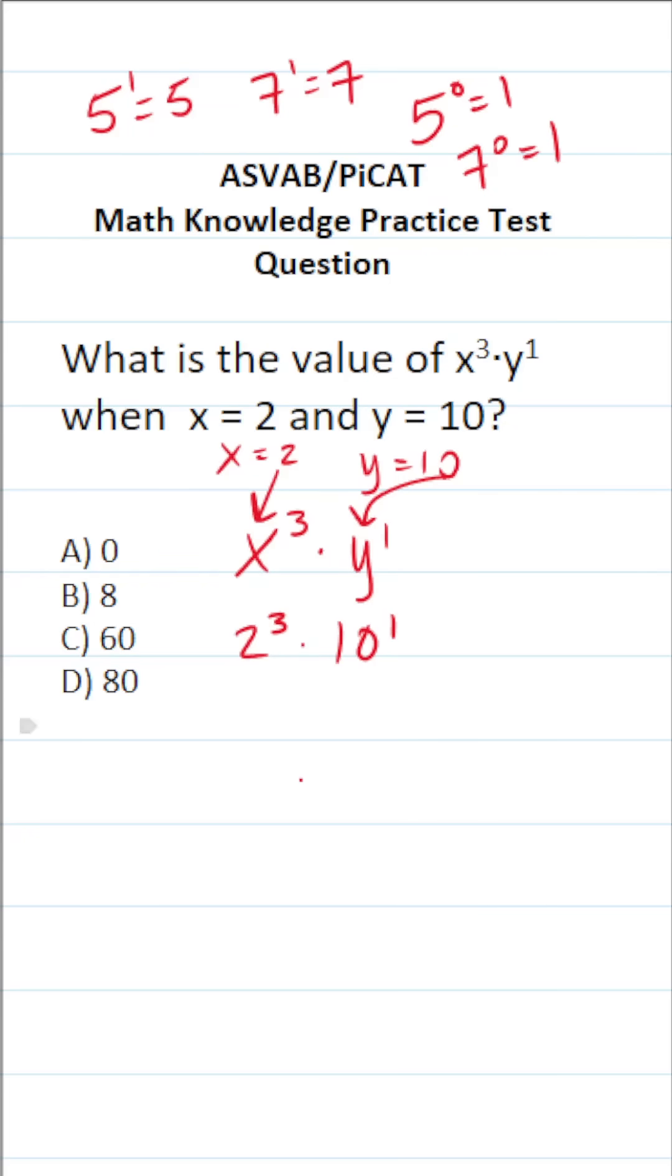So 10 to the first power here is just going to be 10. So this becomes 2 to the third times 10. What is 2 to the third? That's 2 multiplied by itself 3 times. Let's go ahead and work this out. 2 times 2 is 4, 4 times 2 is 8. So this becomes 8 times 10. 8 times 10 is 80. So this one is D, of course.